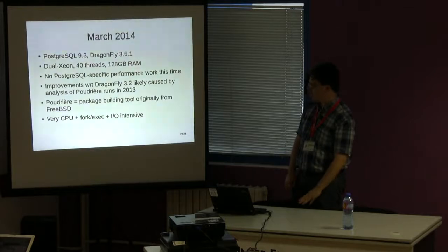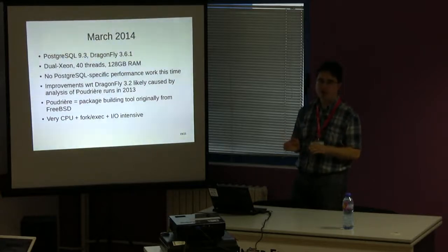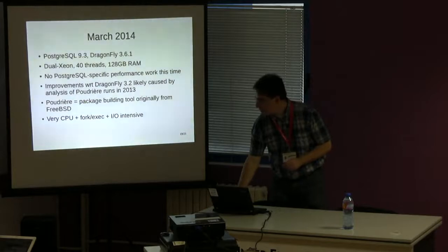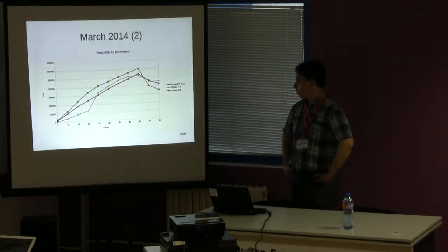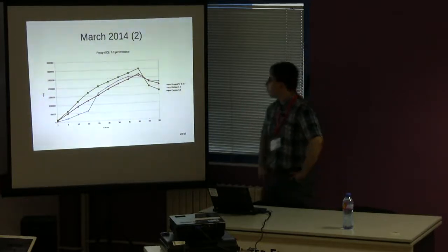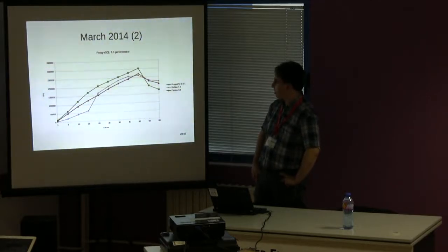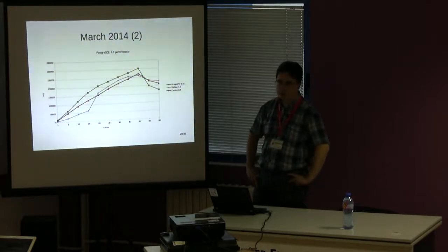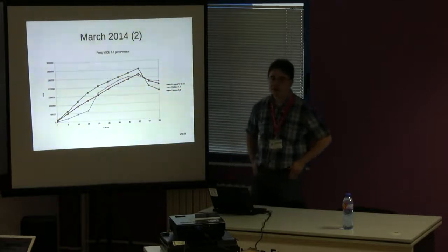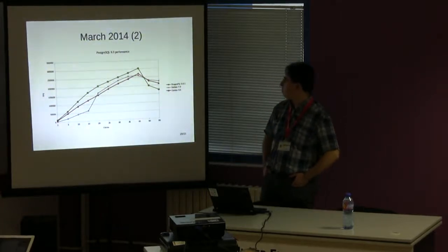Poudrier is very processor-, fork-exec-, and IO-intensive — it really exercises all kinds of kernel subsystems. We found we were now better than Linux for much of the curve. DragonFly is in green; for reference, you have two Linux-based operating systems, Debian and CentOS. DragonFly is faster than Linux and scales better than Linux as long as you have available hardware resources. Performance degradation is a bit more severe than Linux once you have more Postgres clients than hardware resources, but this is a known trade-off.